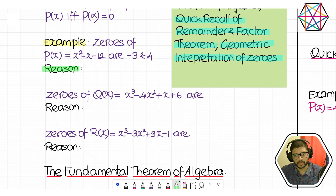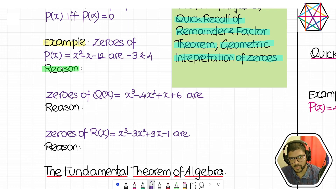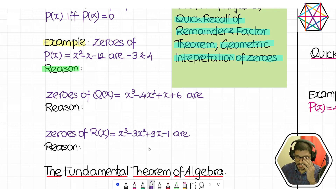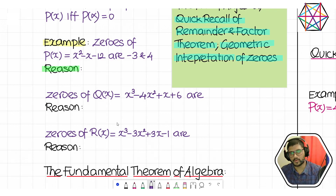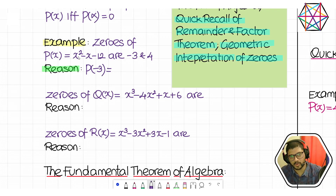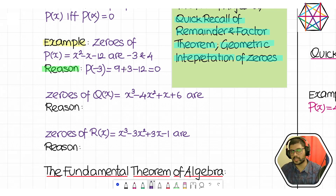In a polynomial, you are free to replace the variable with any number you want. But there are certain special numbers — when you replace x with them, the polynomial gives you the answer 0. Those numbers are called zeros. For example, what is p(−3)? Minus 3 squared is 9, minus of minus 3 is plus 3, minus 12: so 9 + 3 − 12 = 0. Since this input gives you the output 0, that input itself is called a zero of the polynomial.